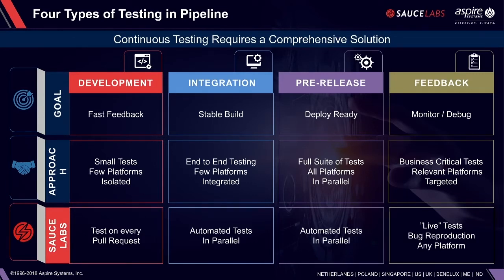To implement this with a cloud-based solution like Sauce Labs: in the development phase, you test on every pull request. For integration, you automate those tests in parallel to get comprehensive coverage and release as quickly as possible, so that testing doesn't become a bottleneck for the organization or dev team. The same principle applies to pre-release.